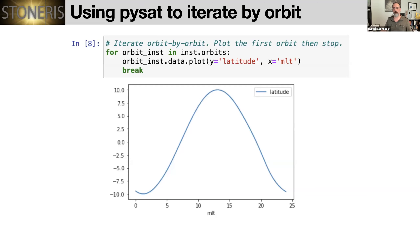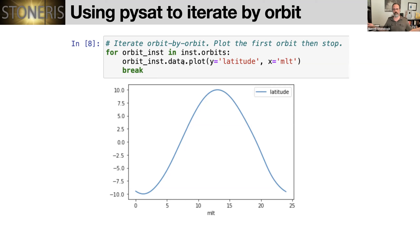If I want to look orbit by orbit, I can invoke PySat's generalized orbit iterator. It will on the fly determine where there are orbit breaks based on what I told it — orbits over local time, looking at magnetic local time. The dot-orbits engages the orbits iterator. Each loop returns a copy of the instrument with a single orbit of data. I can see the magnetic local time going zero to 24 as appropriate. You can also see the 10-degree inclination I supplied is working. After that loop, the instrument object remembers where it was and its state.